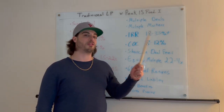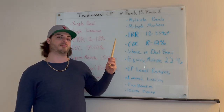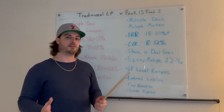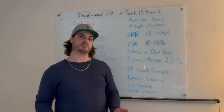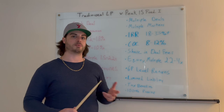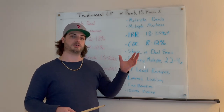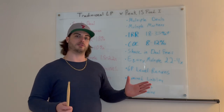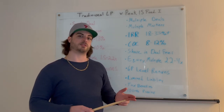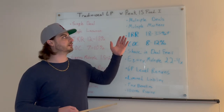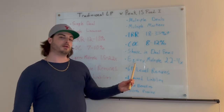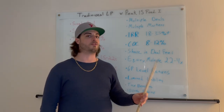IRRs we project anywhere from 18% to 35% plus. Cash-on-cash return anywhere from 8% to 12%, and we get a share of the deal fees. The LPs in our fund get a share of the deal fees. As general partners in a deal, we get an acquisition fee and a disposition fee — generally 1% of the purchase price and 1% of the sales price. As general partners, we get a percentage of those fees, and we split those fees 50-50 with the limited partners in our fund. On the deal level, the fees get split with the other general partners on the deal and our fund.